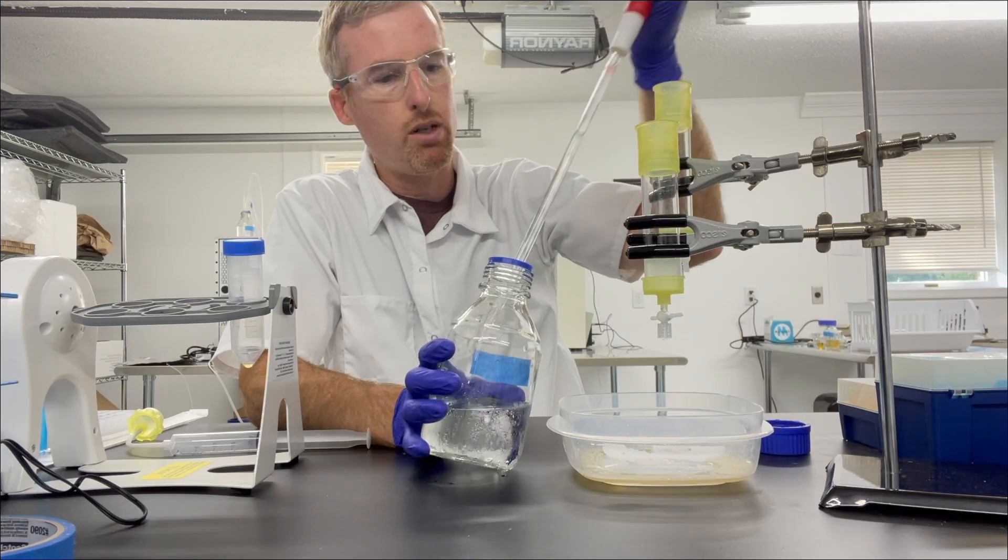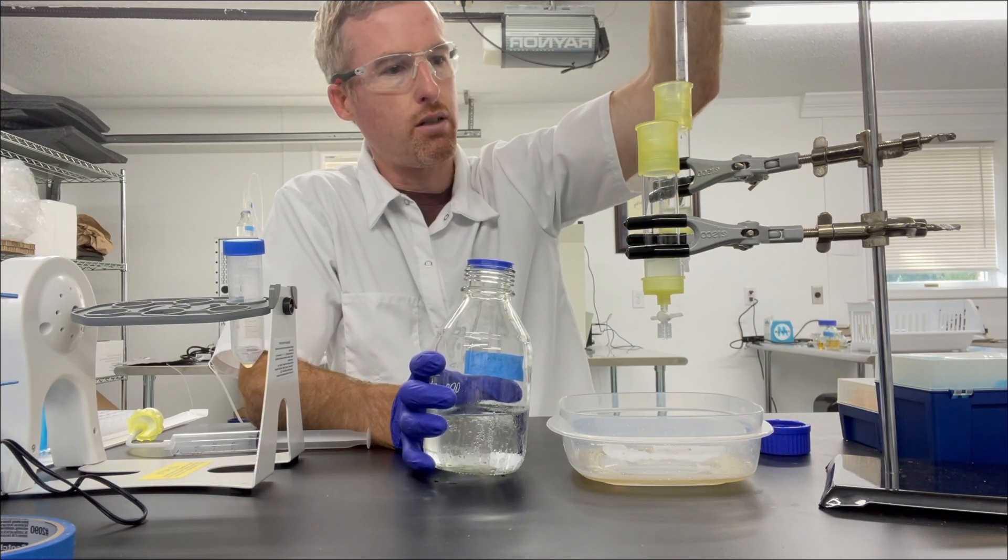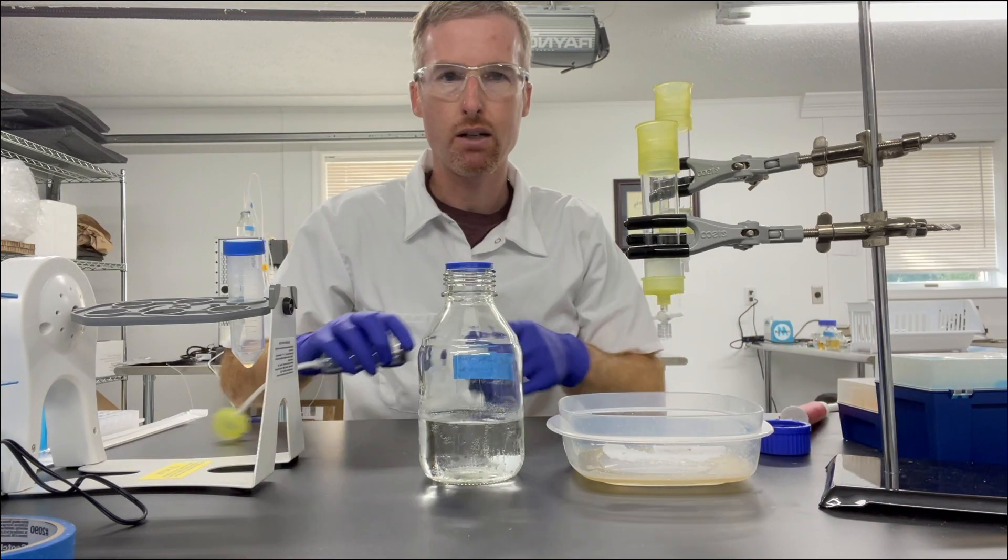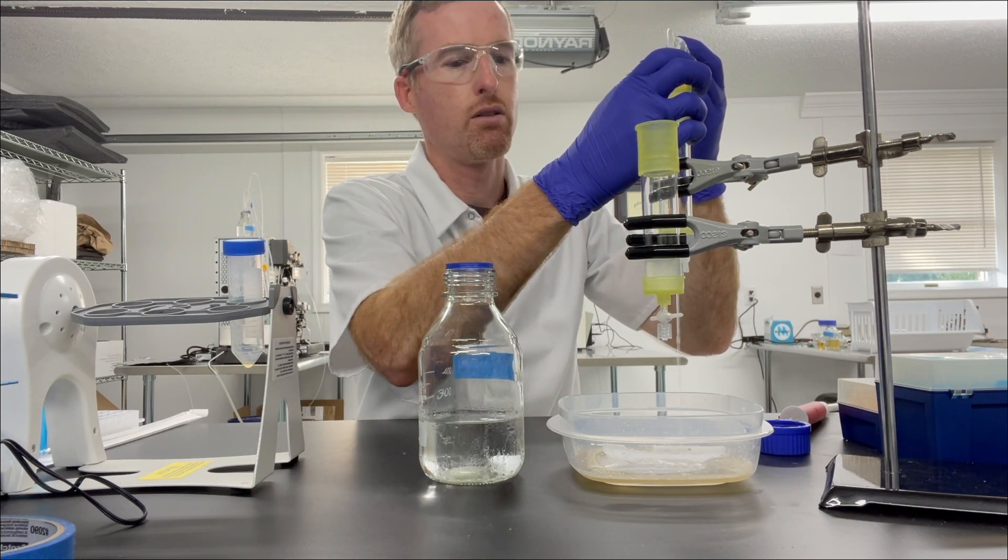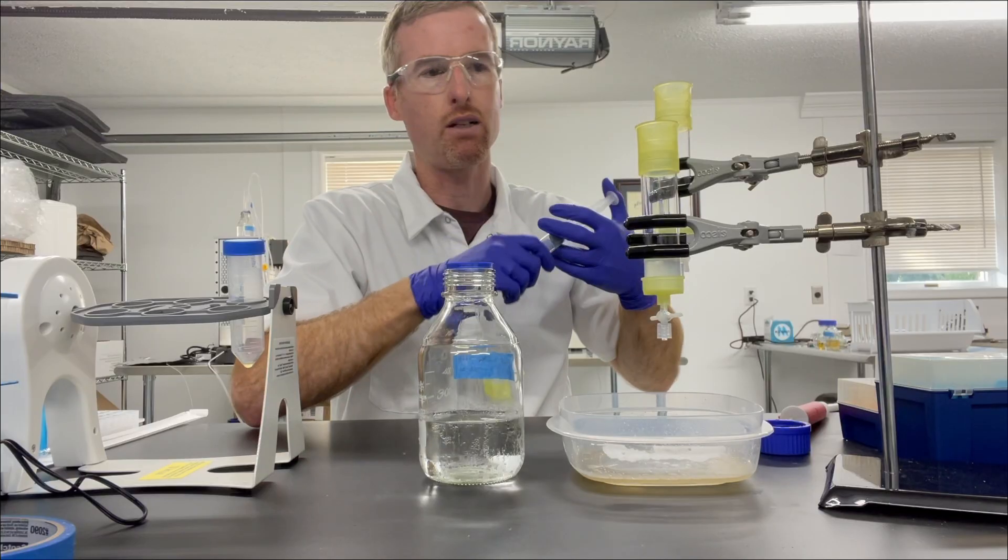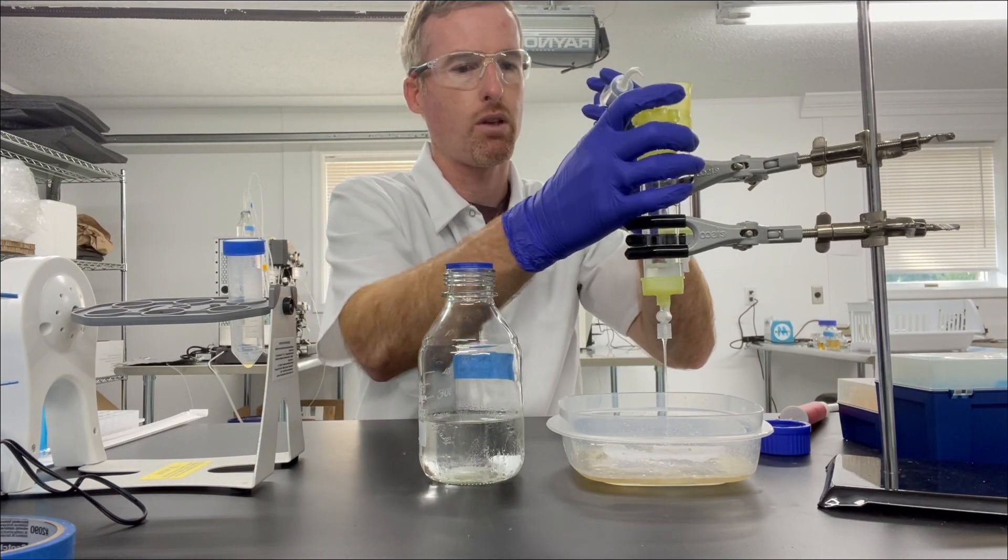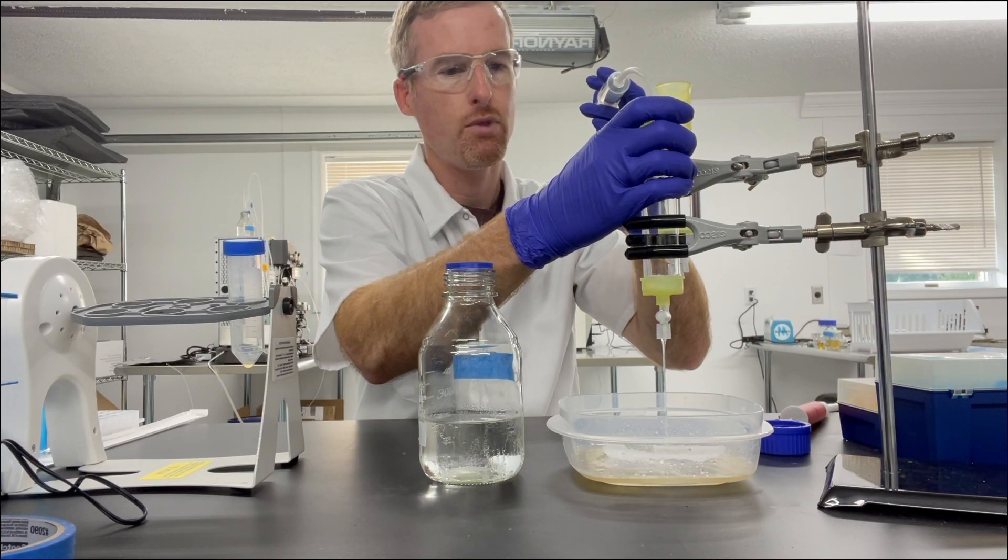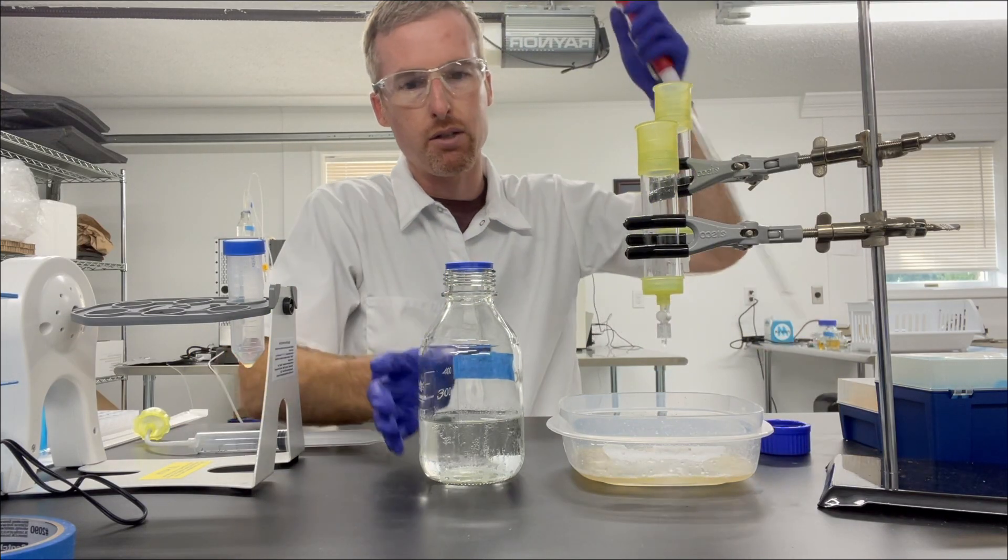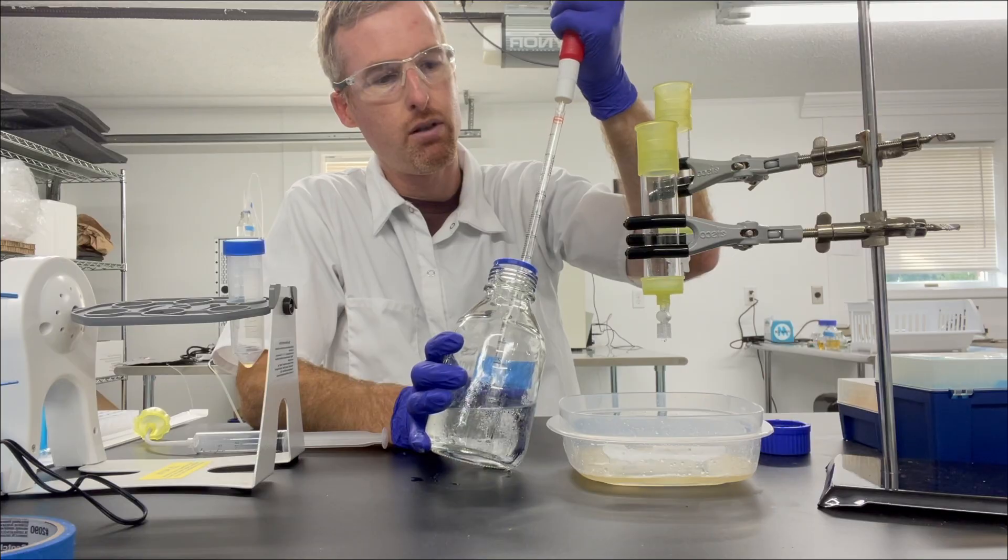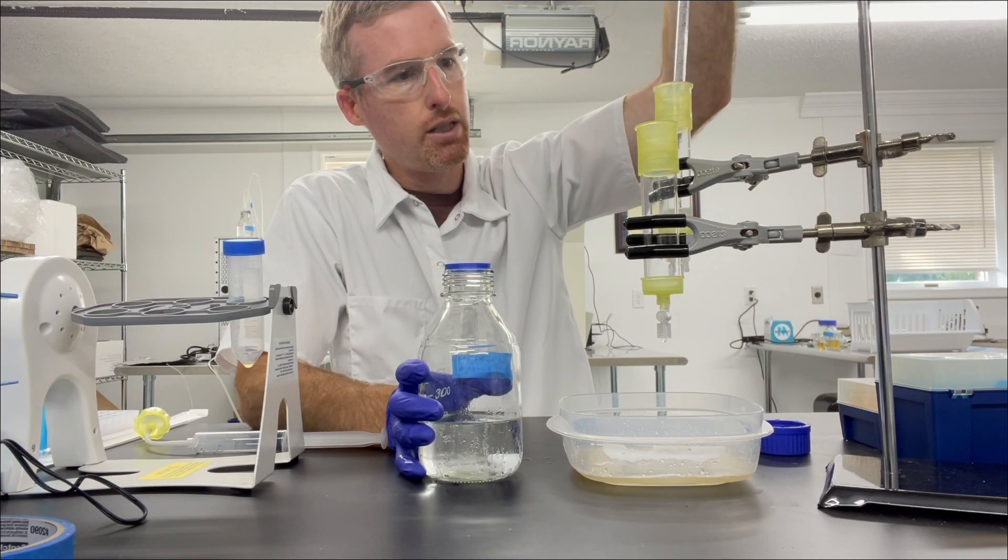So I do 10 ml washes. It depends on the size of your purification. I have 1 ml of nickel agarose, so I'm using 10 ml of wash. If you had 2 ml or, let's say, if you had about 5 ml of nickel agarose, then you would start using more like 20 ml of wash buffer at a time. But I'm doing 10 ml washes, and I'm going to repeat them 10 times.